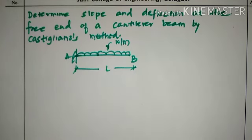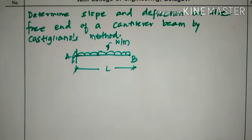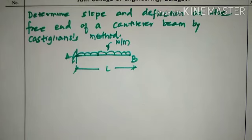Hello everyone, welcome to this session on strain energy concept and theorems. In the previous session we solved a problem related to a cantilever beam subjected to a point load at the free end, where we found the slope and deflection at the free end by Castigliano's theorem. Castigliano's first theorem states that the partial derivative of strain energy with respect to a load gives the deflection at the point where the concentrated force has been placed.